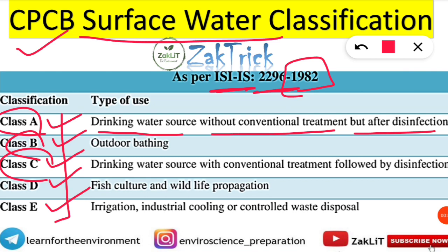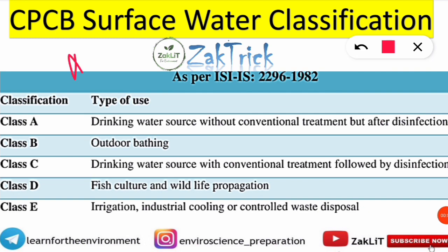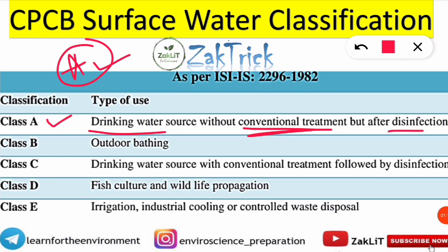Let's start with Class A. 'A' means A-grade — the very top class, the best. So Class A water is used as drinking water. It is first-class surface water that can be consumed without conventional treatment, but after disinfection. Disinfection is still required, but no conventional treatment is needed because it is Class A quality water.